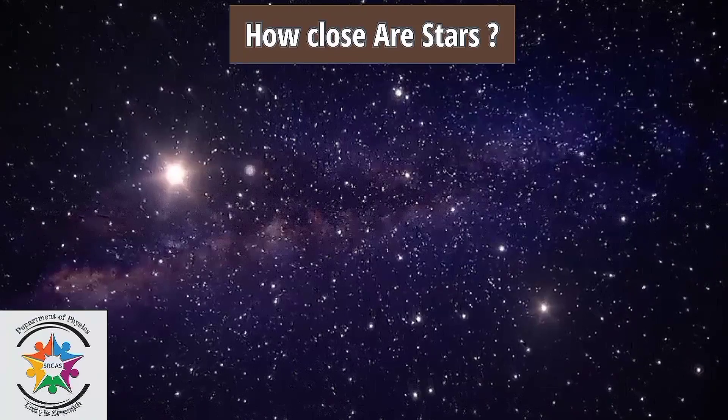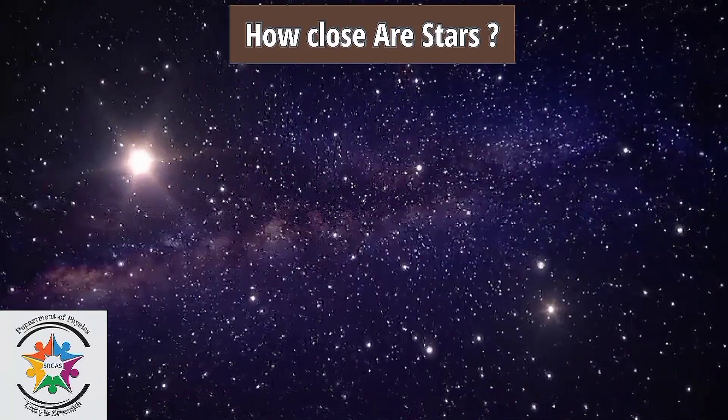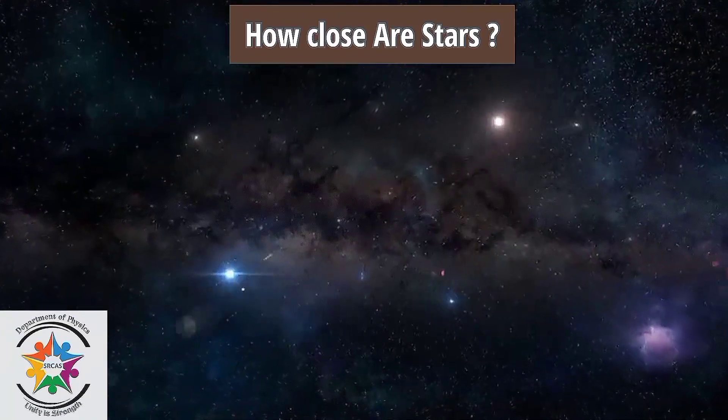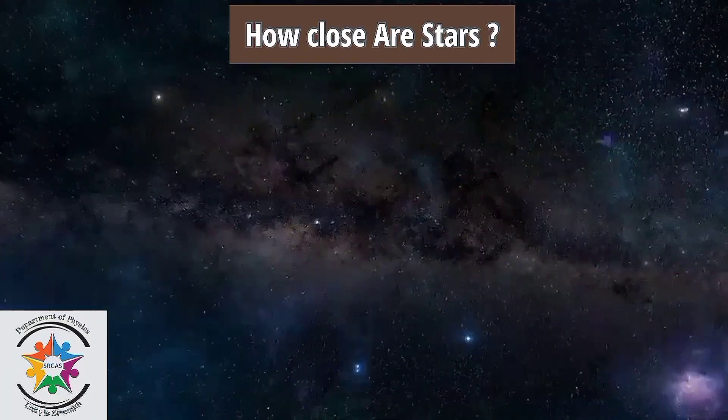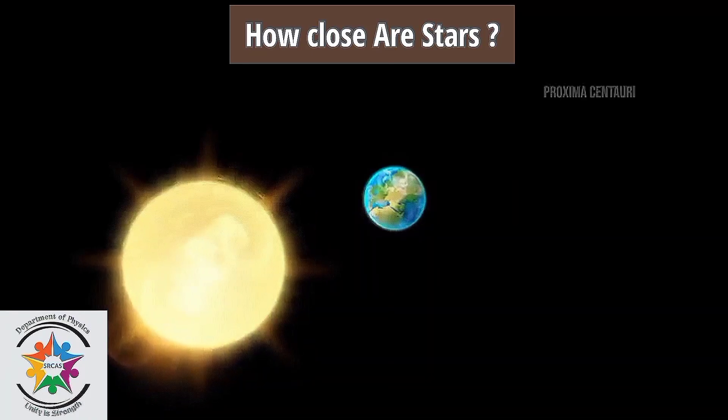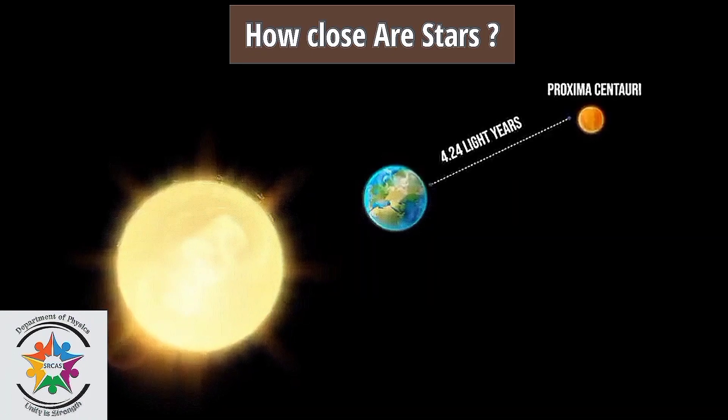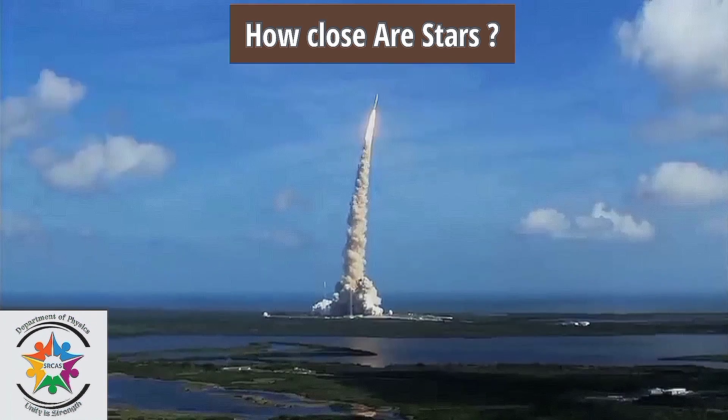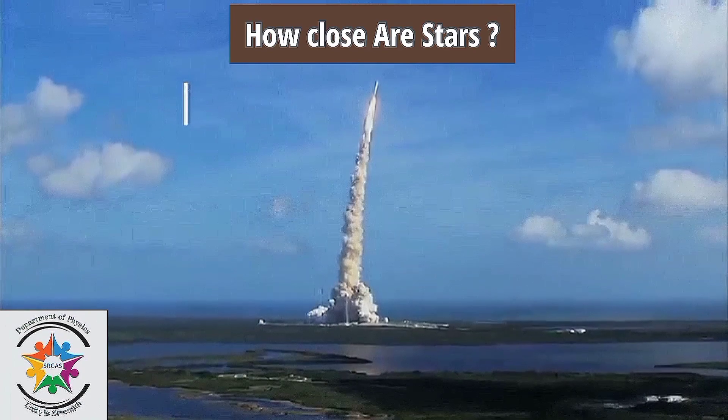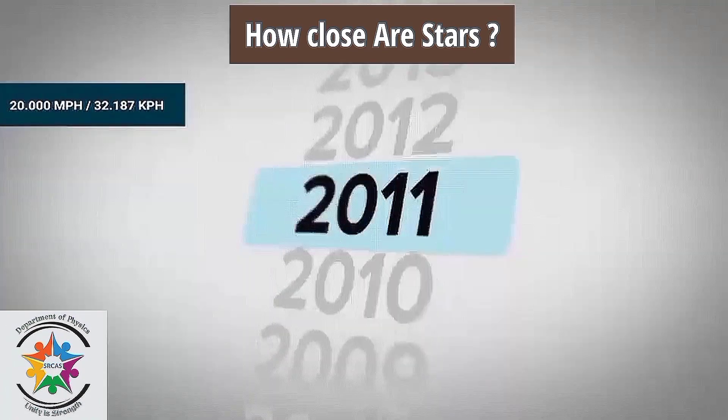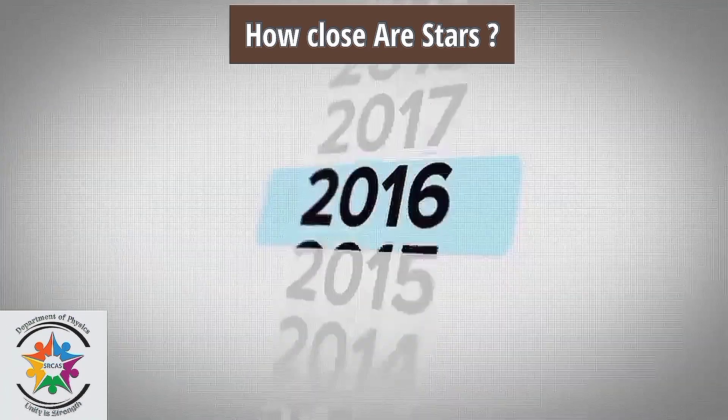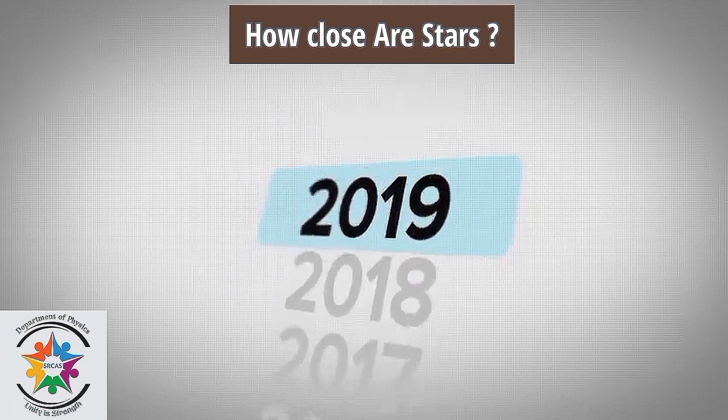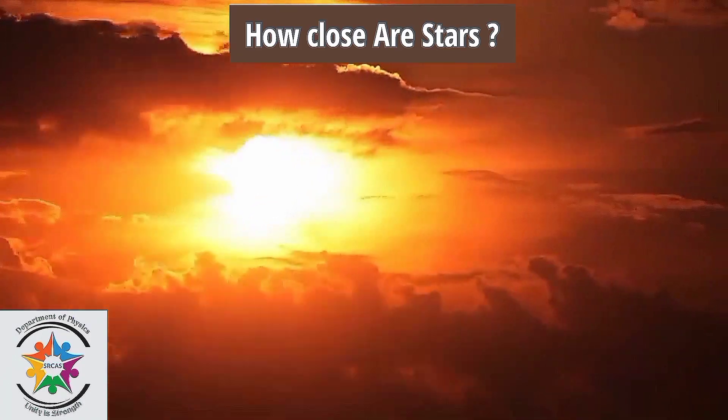But it could not be further from reality. Apart from those that exist in the same systems as each other, such as binary stars, there are vast amounts of empty space in between each star. The nearest star to us is Proxima Centauri, and it's 4.24 light years away from us, or about 25 trillion miles. Even if our fastest spacecraft, which travels at about 20,000 miles per hour, were to travel there, it would nearly take a 150,000 year journey to reach there.